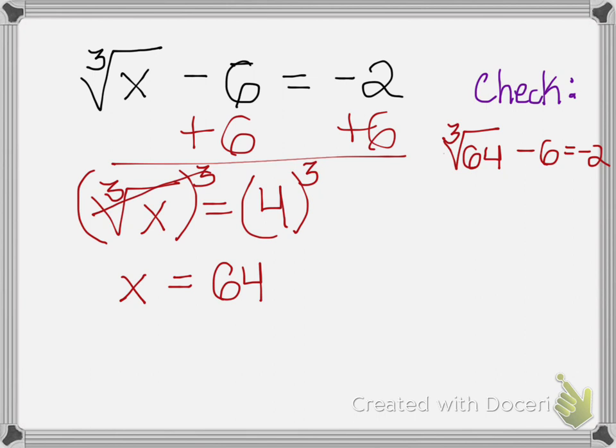And just in case you forget, you're going to hit the button that says math and then hit number 4. The cube root of 64 equals 4. And now, it's saying 4 minus 6 should equal negative 2. Well, 4 minus 6 is negative 2 and that does equal negative 2. So, therefore, 64 is my solution.